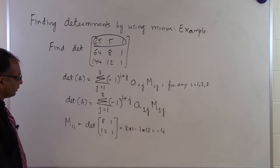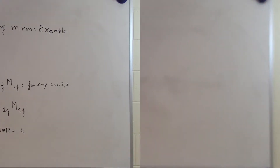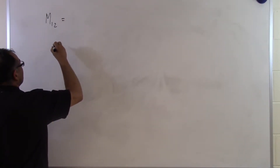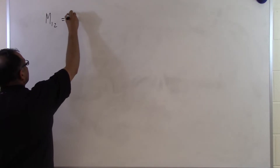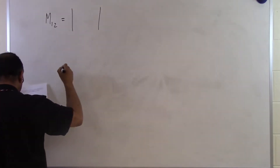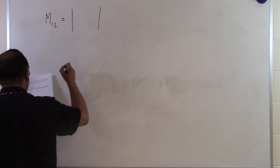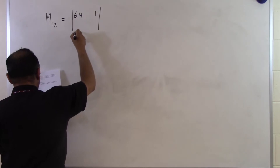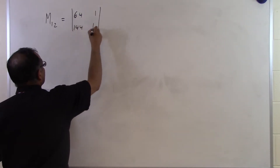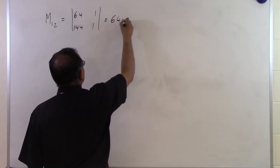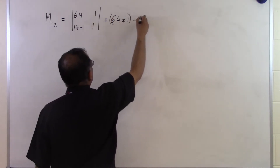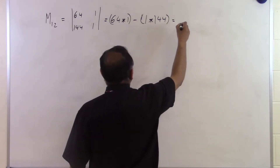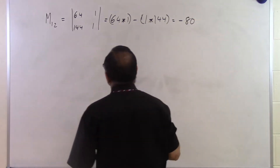For M12, I take out the first row and the second column, leaving 64, 1 and 144, 1. That gives 64 times 1 minus 1 times 144, which equals minus 80. So M12 equals minus 80.